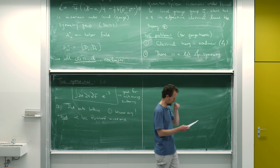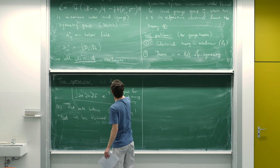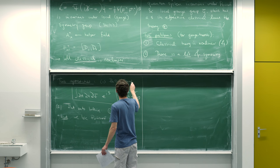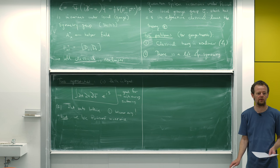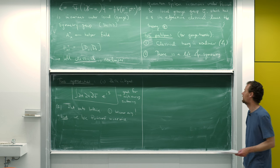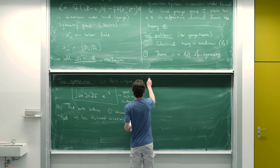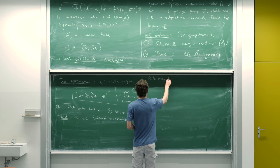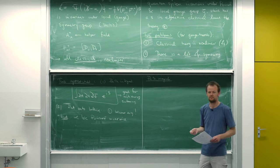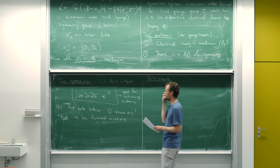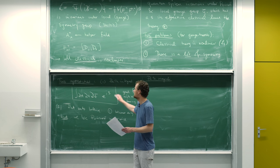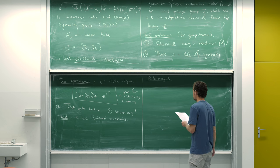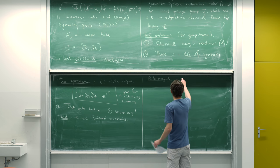Today I'm going to talk about the path integral quantization recipe number one — how do you do it for non-abelian gauge theories. I'll go straight to non-abelian gauge theories; I won't even worry about U1. Here's the problem with path integrals: maybe they just work, but we need to investigate.